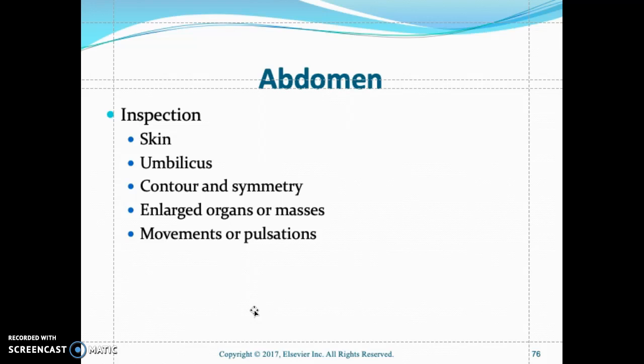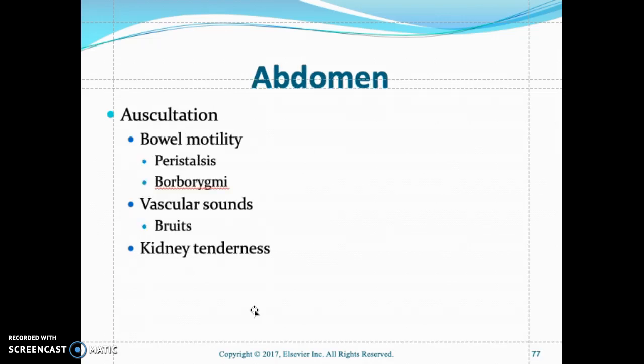Then proceed to palpation. Light palpation is about two centimeters deep; deep palpation is about four to five centimeters. Listen to each quadrant starting with the right upper quadrant, working in a clockwise manner. Use a warm diaphragm of the stethoscope placed over each quadrant. Listen for hyperactive bowel sounds, which indicate GI motility issues such as gas and diarrhea. Also listen for hypoactive bowel sounds, which may be signs of decreased gastric emptying.